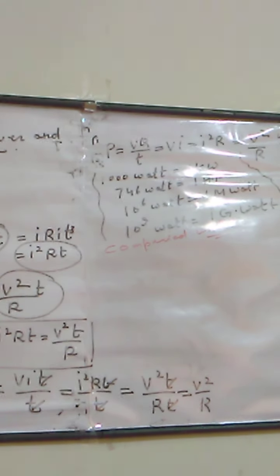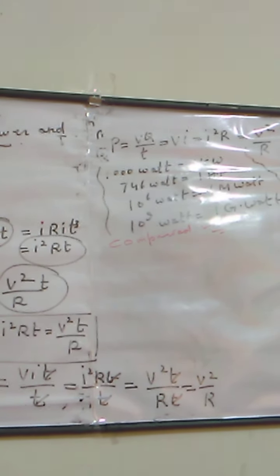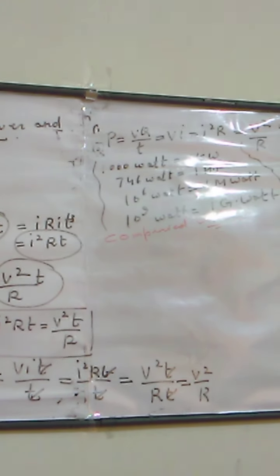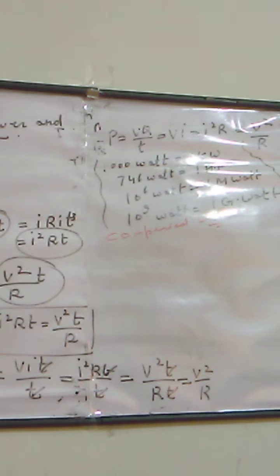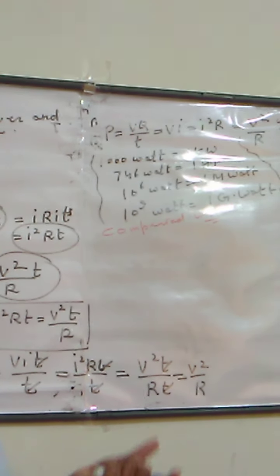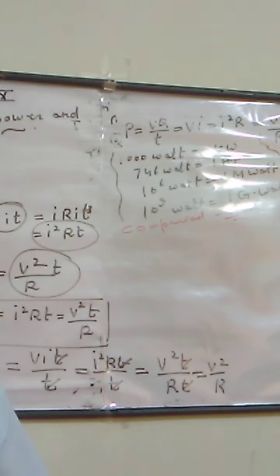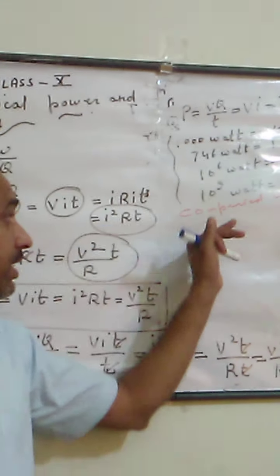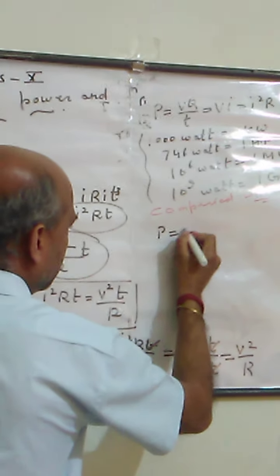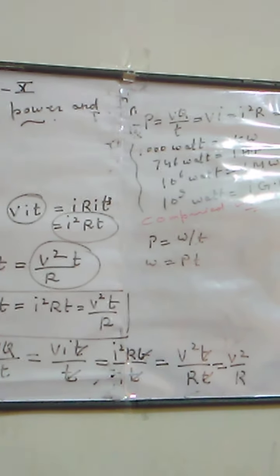If you want to measure electrical energy, the electrical meter helps us measure it. The reading on that meter tells us the energy we are using and accordingly the cost we pay for it. The commercial unit for measuring energy comes from the formula: power equals W upon t, so W equals P times t.